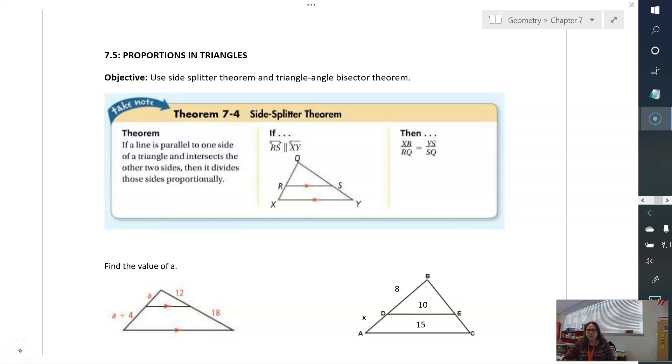Hello, everyone. This is Mrs. Snook with section 7.5, Proportions in Triangles. This is our last section in chapter 7. And what's going to happen in this section is we're going to have triangles that have a segment splitting them. And then we can write some ratios dealing with the different side lengths of these triangles as they're split into different pieces.